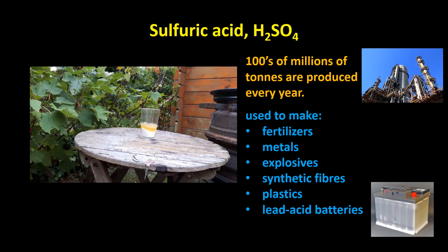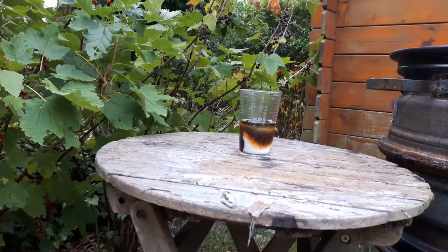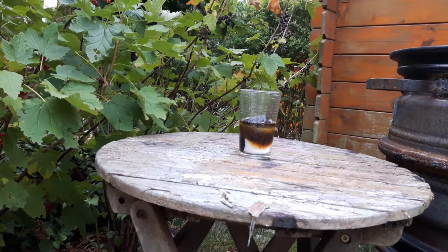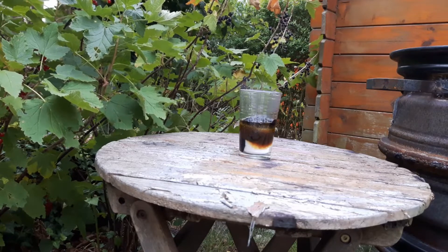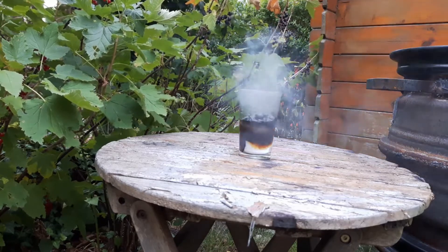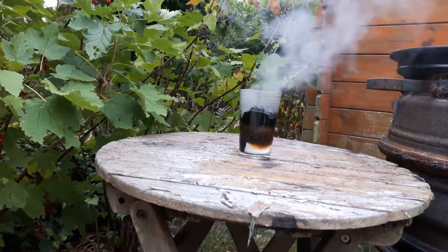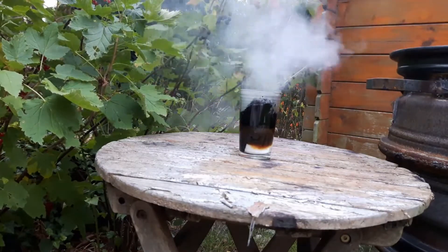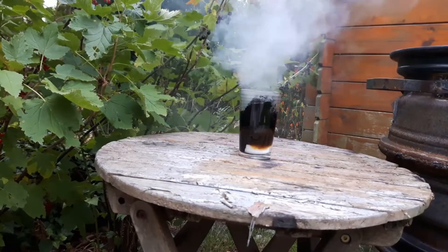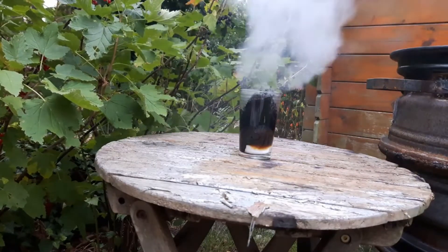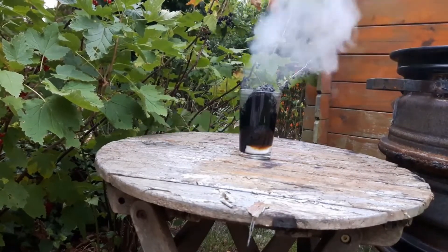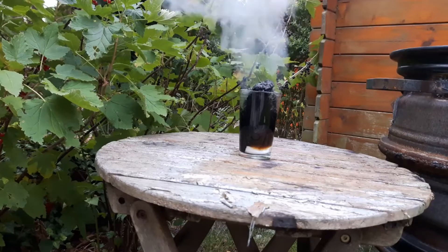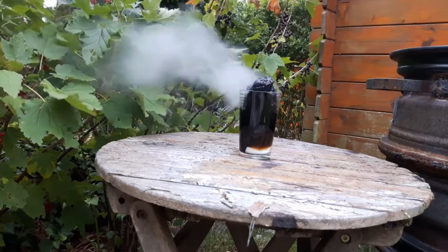Other acids like hydrochloric acid are also widely used in industry. Concentrated sulfuric acid reacts with sugar and slowly turns it black. After about a minute the reaction starts producing hot jets of steam and a column of black carbon rises up out of the glass. The carbon rises because the chemical reaction produces water in the form of steam. The steam creates bubbles within the carbon that is left behind, so the whole mixture rises up.